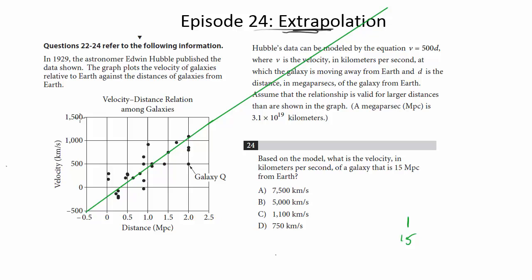So right away, you might get an idea that we can get rid of C and D because 1100 and 750 for velocity are both on the graph and they're nowhere even close to the distance we need. So at the very least, we can get down to A and B.